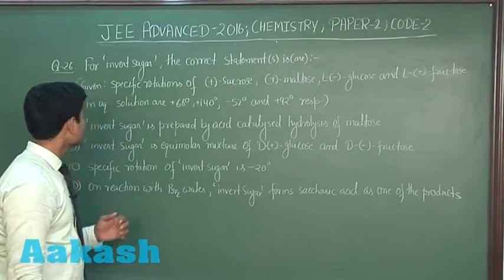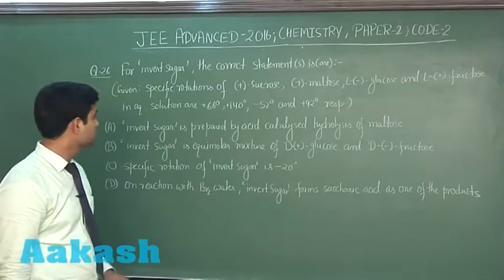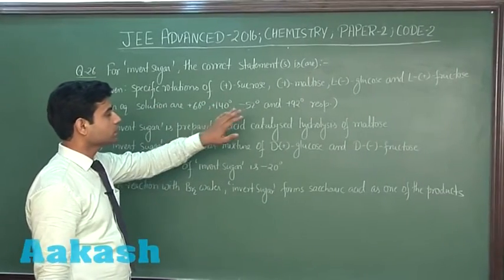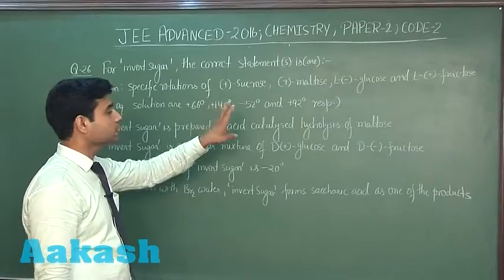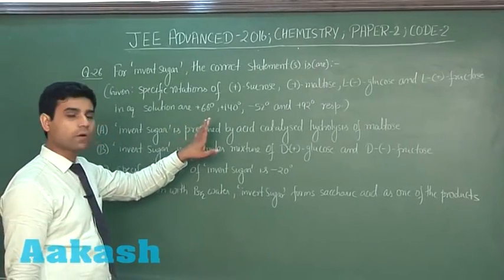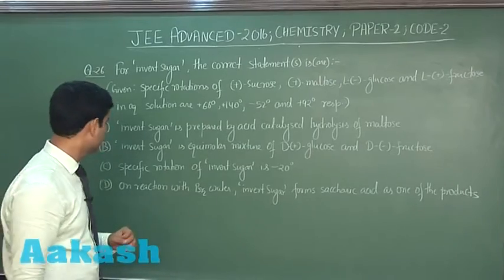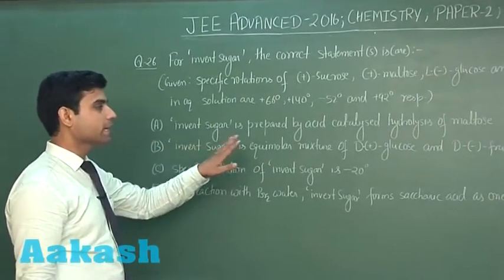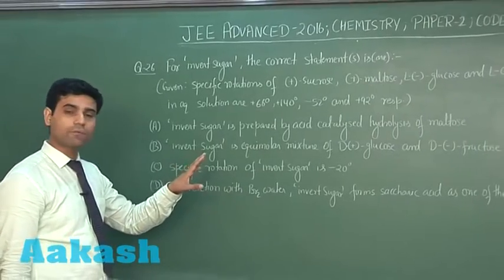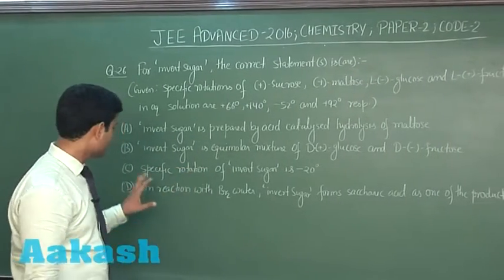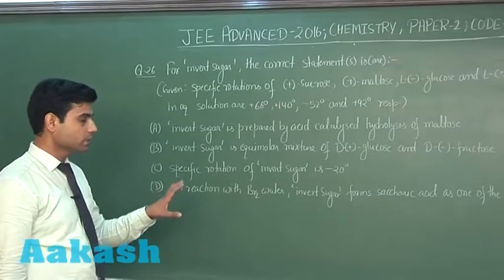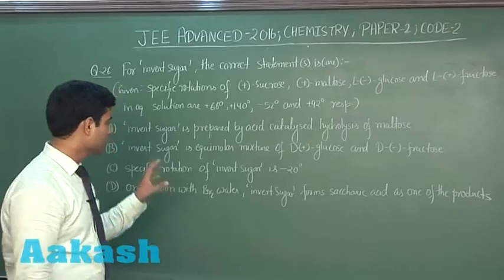The next question is about invert sugar — the correct statement or statements are to be identified. We are given the following specific rotation values: sucrose +66°, maltose +140°, D-glucose −52°, and D-fructose +92° respectively. The options are: (A) invert sugar is prepared by acid-catalyzed hydrolysis of maltose; (B) invert sugar is an equimolar mixture of D(+)-glucose and D(−)-fructose; (C) specific rotation is −20°; (D) on reaction with bromine water, invert sugar forms saccharic acid as one of the products.